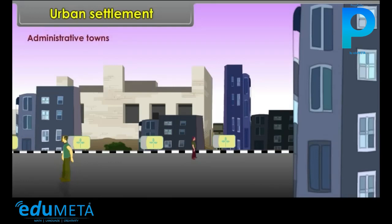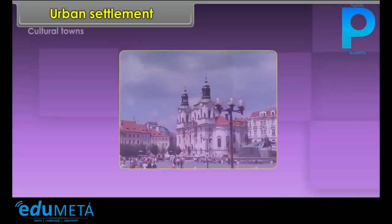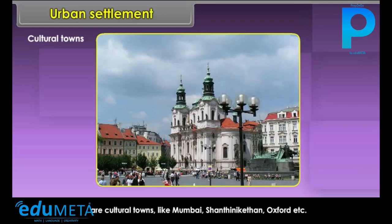Administrative Towns: Those towns which perform the function of administration of the country are called administrative towns, like Delhi, London, Tokyo, etc. Cultural Towns: Those towns which are known for the promotion of a country's culture and education are cultural towns, like Mumbai, Shantiniketan, Oxford, etc.